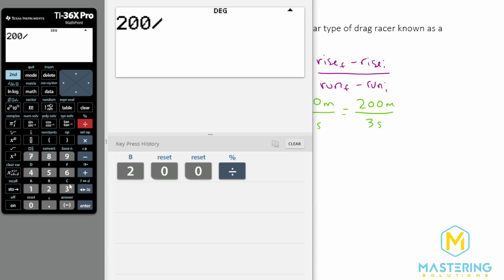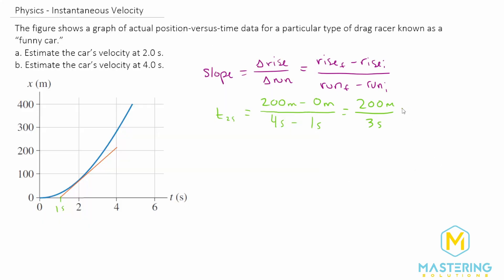200 divided by 3 gives us 66.6, and we can round that to 67 meters per second. So that's a pretty good estimate for the velocity at exactly two seconds.